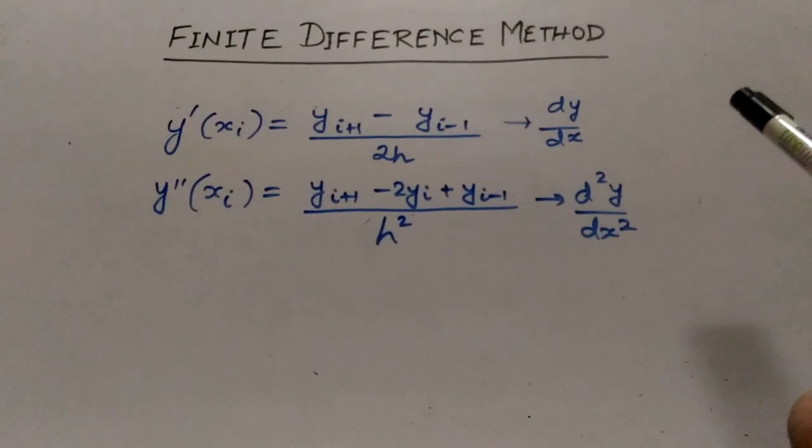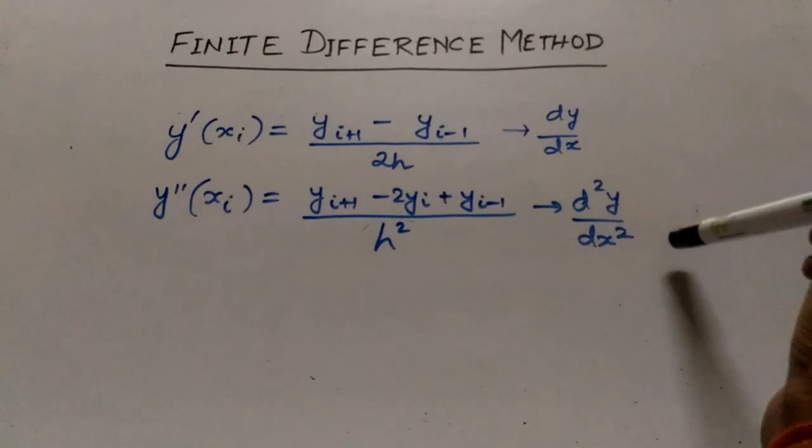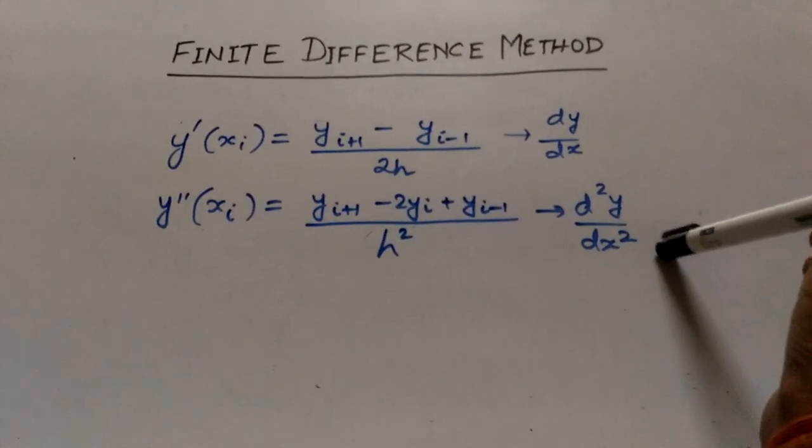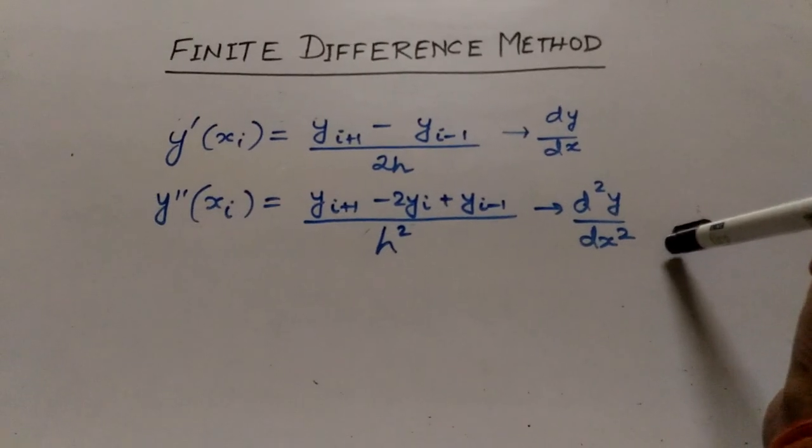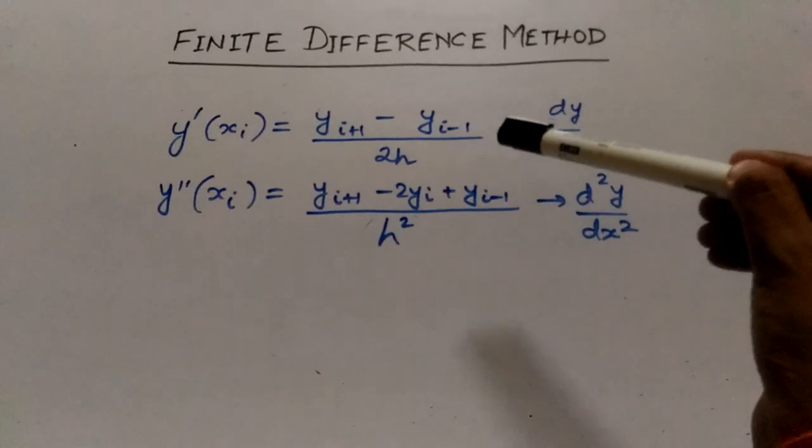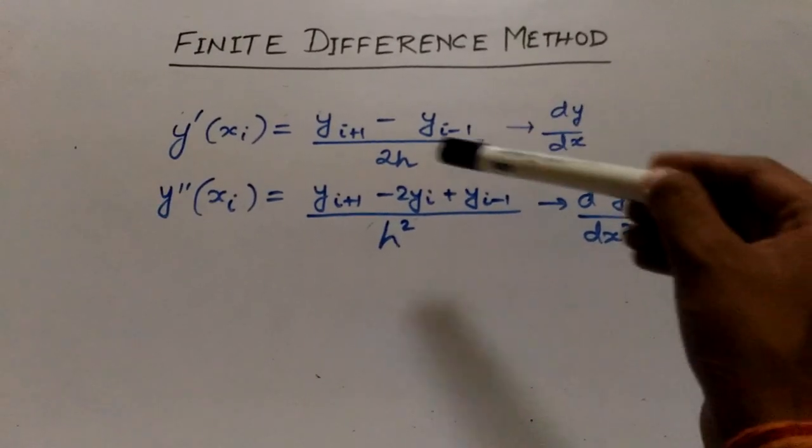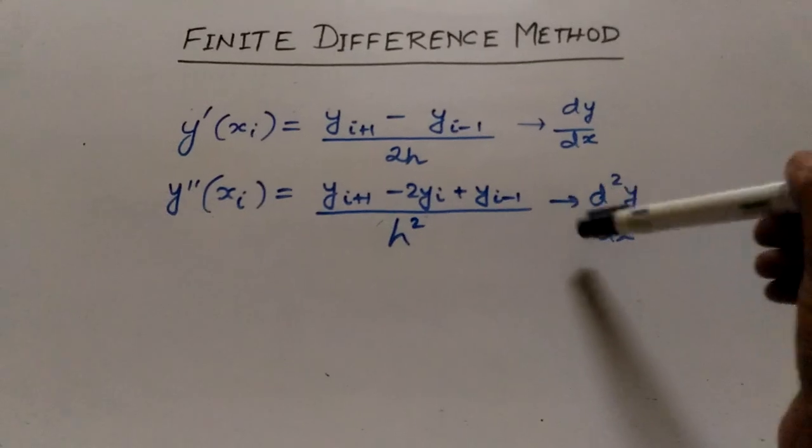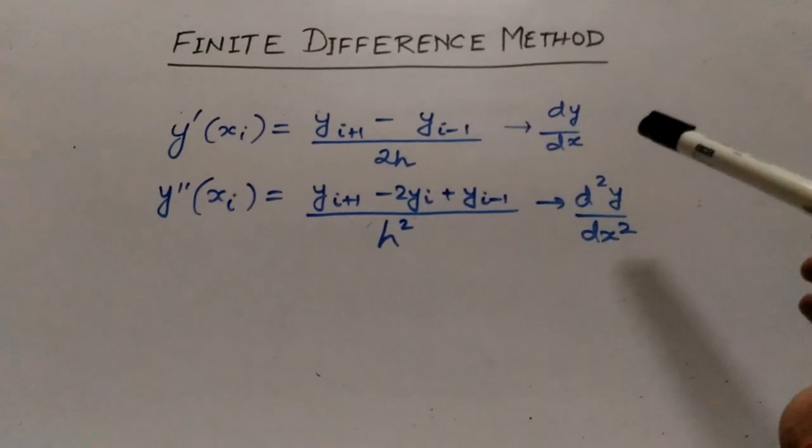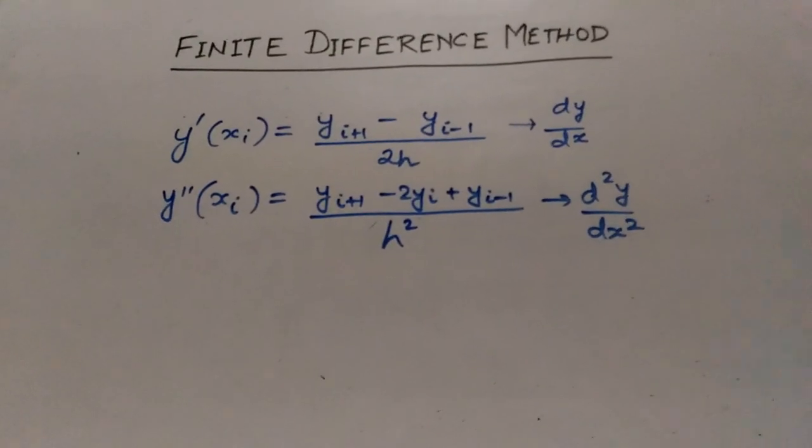Similarly, if the notation is of order 2, that is second order derivative d²y/dx², then you have to replace it by this expression: y_{i+1} minus 2y_i plus y_{i-1} divided by h². You have to keep these two expressions in mind before proceeding with the finite difference method.